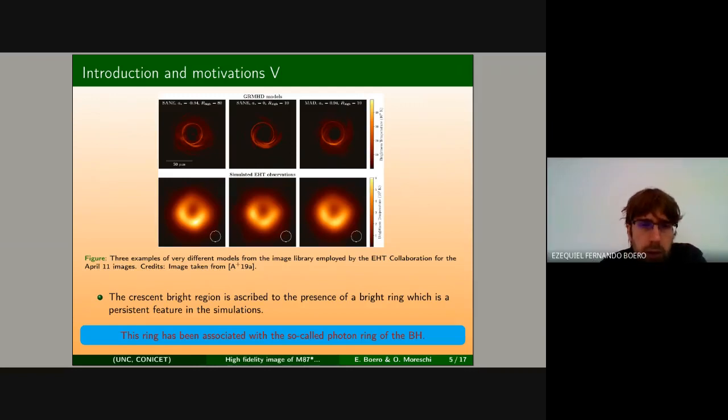What is important to emphasize here is that the collaboration has reported that in the template bank of simulations, a persistent feature in all of the models is a very thin bright ring that has been described as the cause of the observed bright region in the final blurred images. Even more, they have associated that ring with the so-called photon ring of the black hole.